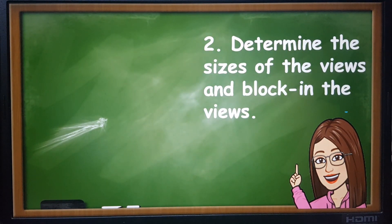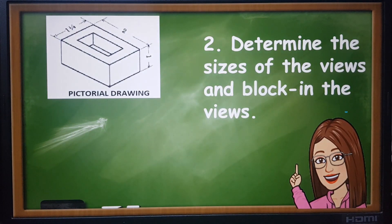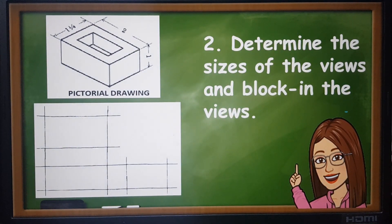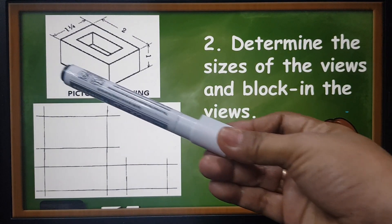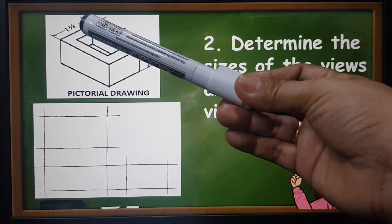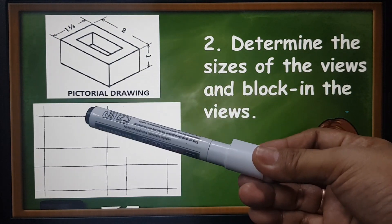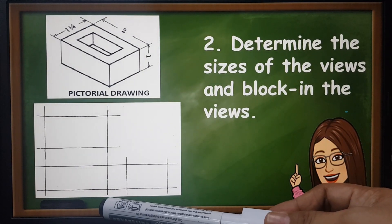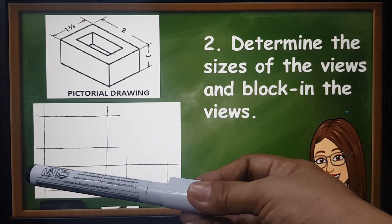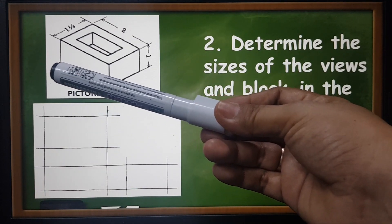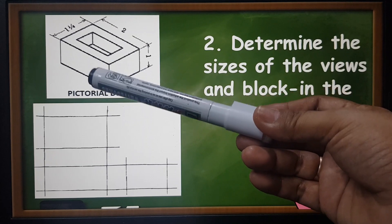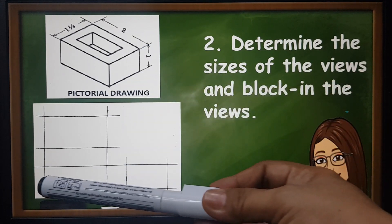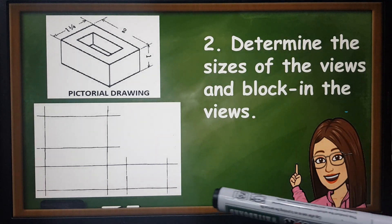Step two: determine the sizes of the views and block in the views. You're going to get the overall length of the top and the front view. After drawing the vertical and the horizontal line, followed by vertical, then this time we're going to get the height of the front and the height of the right side. Transfer it here, then draw a horizontal line.